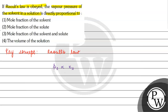Now, suppose here component A: the partial vapor pressure of component A is directly proportional to chi A, which is the mole fraction of the solvent.